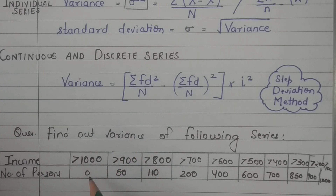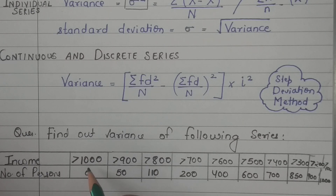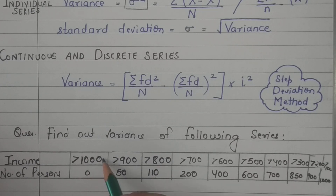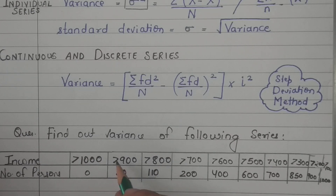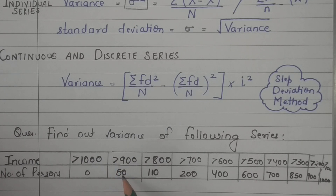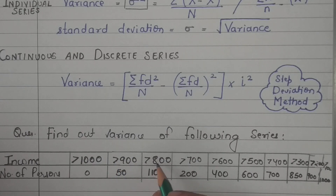There are 9 observations given. Persons whose income is more than 1000 is 0%, more than 900 is 50%, more than 800 is given, and so on — this is a 'more than' cumulative frequency distribution.